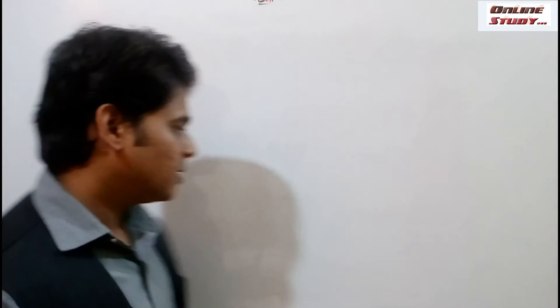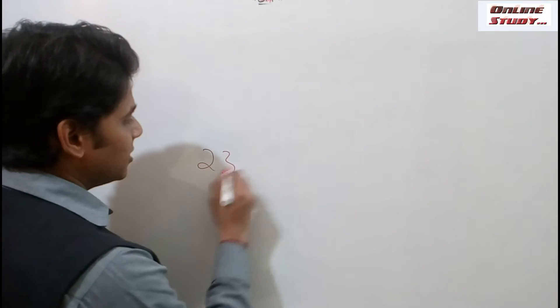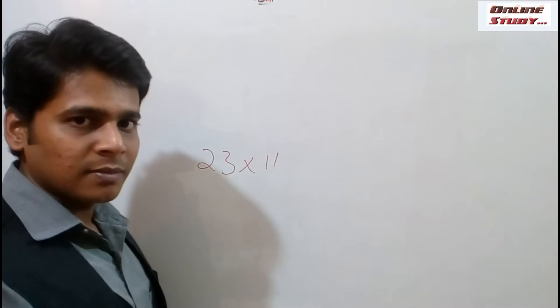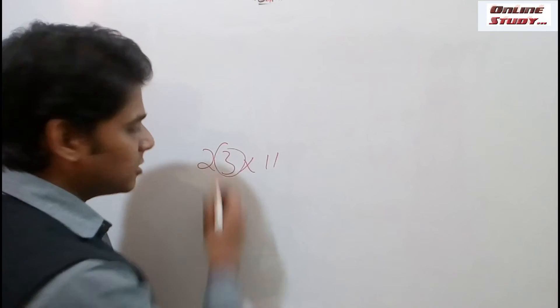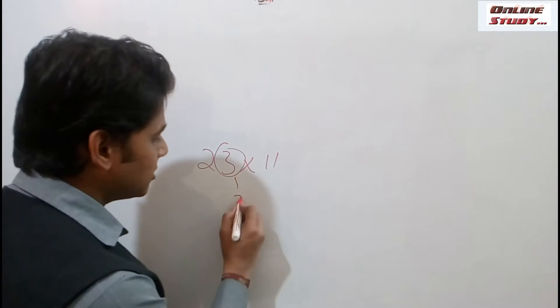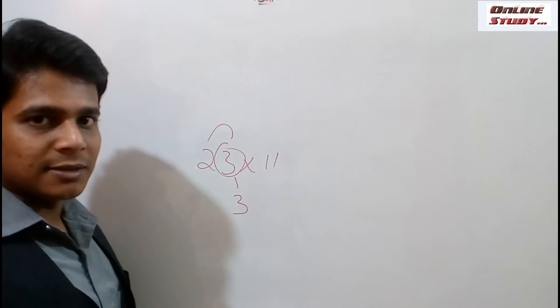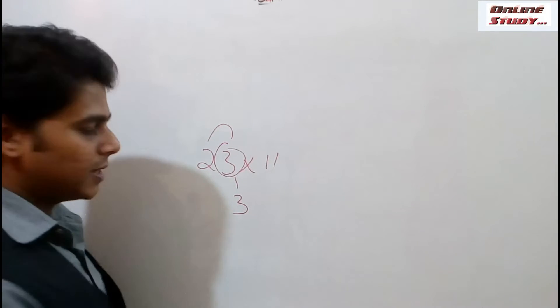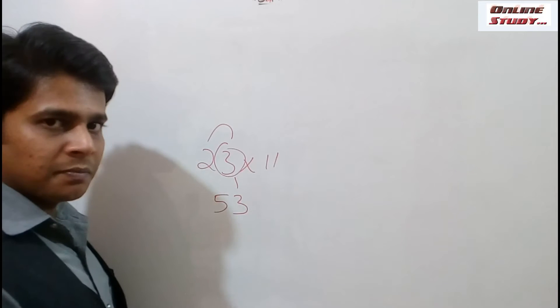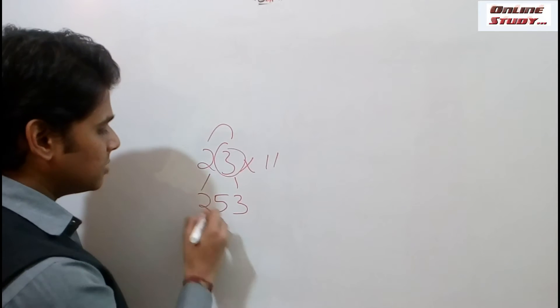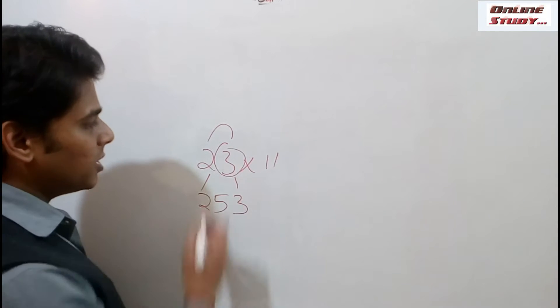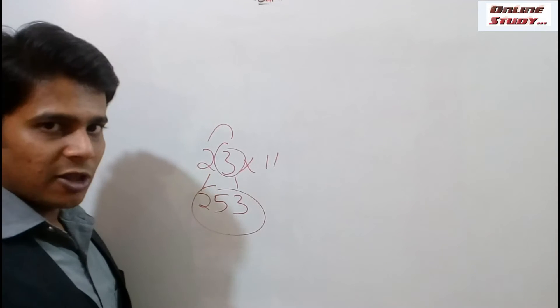Let's take an example. Now let's see how multiplication with 2-digit numbers can be done. We shall multiply 23 into 11. We need to place the units place as it is — that is 3. The next step is add units and tens: 3 plus 2 is 5. Place 5. The final step is place the tens place as it is — that is 2. So the multiplication of 23 into 11 is 253.